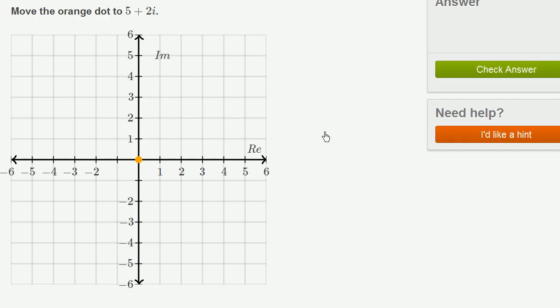Let's do a few more of these. So 5 plus 2i. Once again, real part is 5, imaginary part is 2. And we're done.